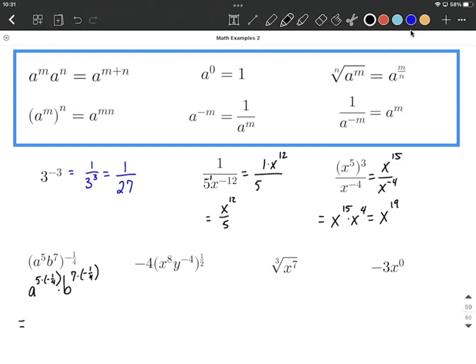So that'll be a raised to the negative 5/4ths times b raised to the negative 7/4ths.